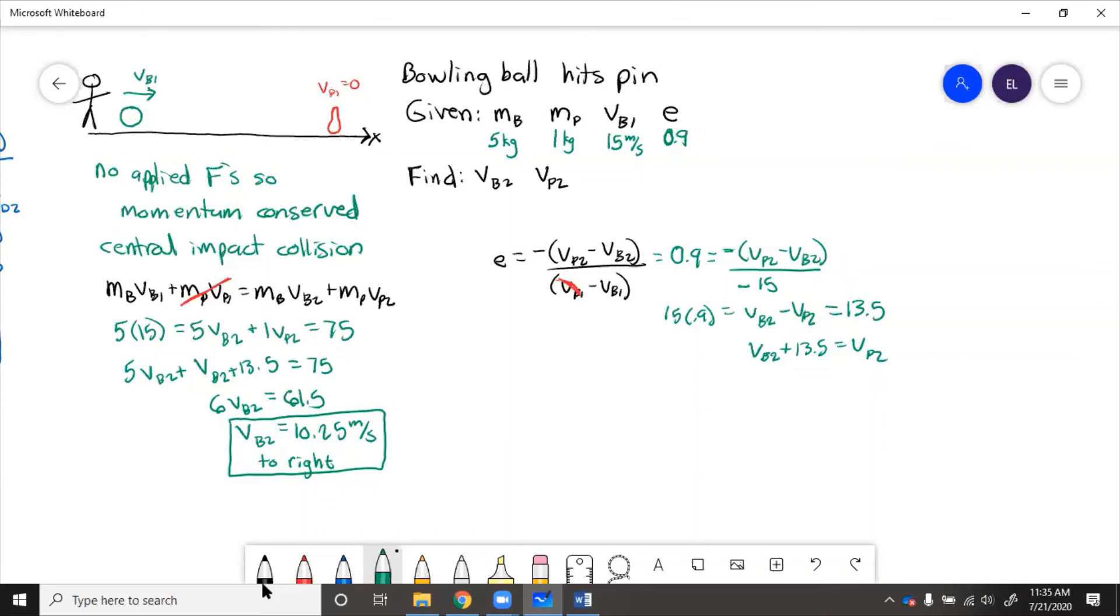Now if we take this, plug it back in over here, 10.25 plus 13.5 equals VP2, 23.75 meters per second equals VP2, which is also to the right. So the pin just kind of goes flying, which also makes sense because that's what happens when you hit the pin with the bowling ball.